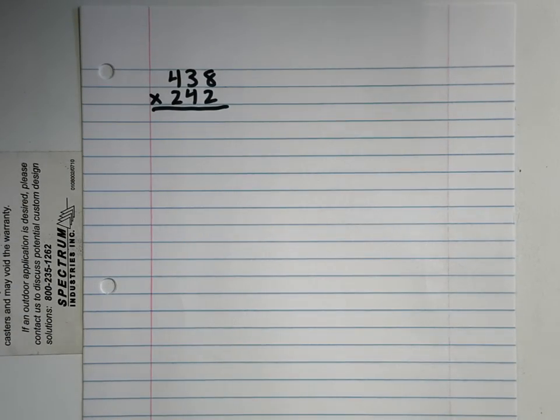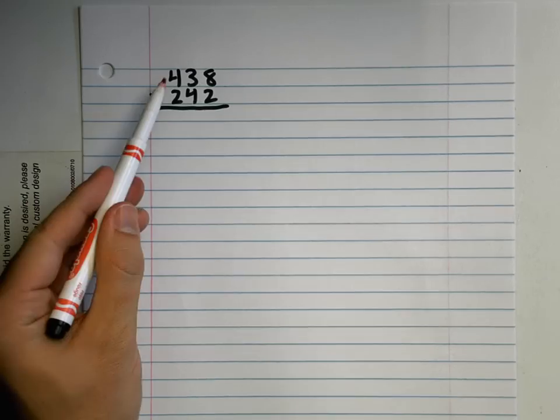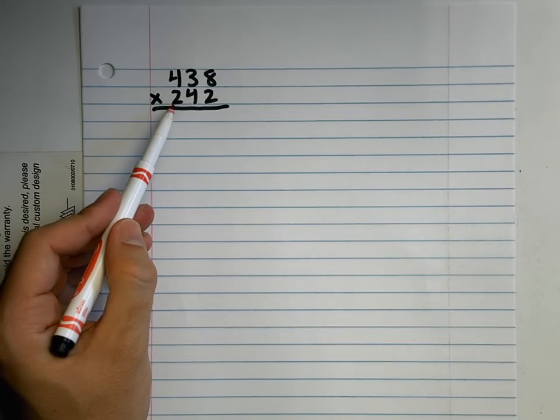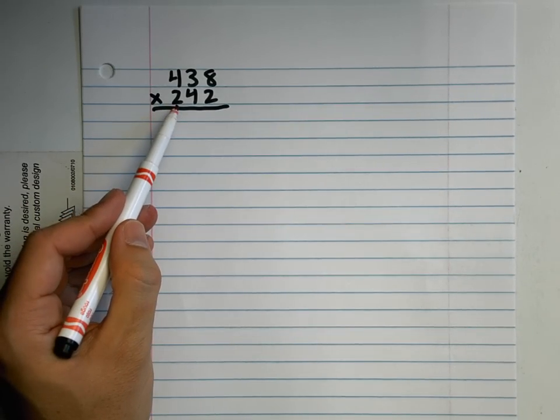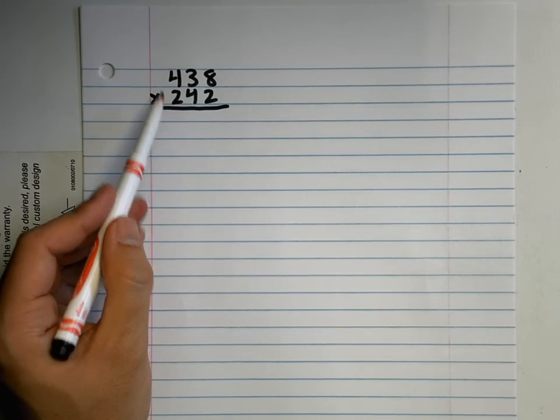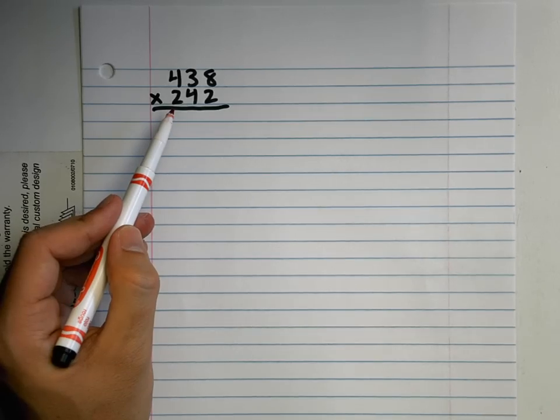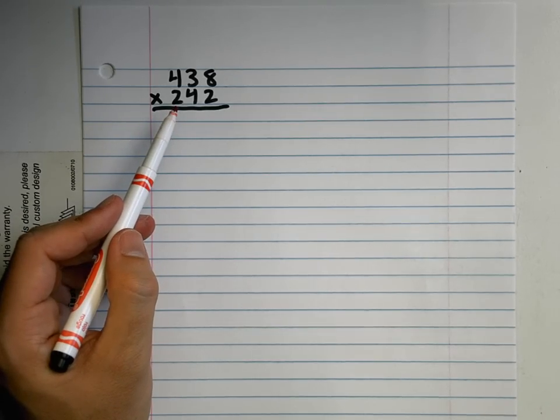Okay, so far we have multiplied hundreds by numbers in the ones and tens place, but now we're going to multiply by a number with numbers in the hundreds place. Most of our steps are the same, we're just adding maybe one or two more.